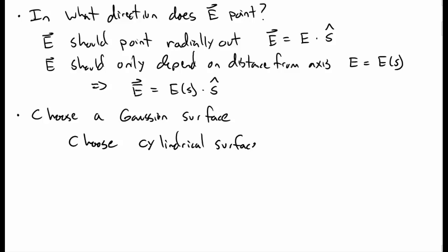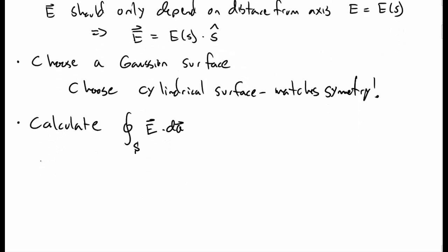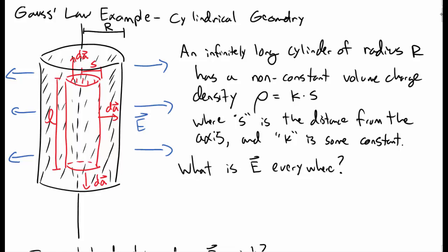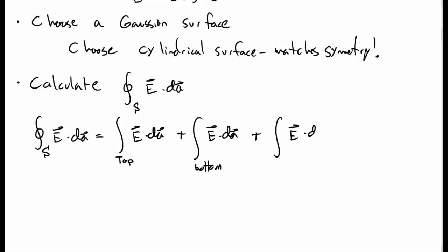We wanted to match the symmetry — generally, you choose a surface that has the same symmetry as your problem. Now we want to calculate the flux of the electric field through our Gaussian surface. The flux is composed of three different parts: the flux through the top, the flux through the bottom, and the flux through the side.